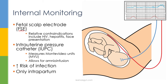The FSE is a long wire with a thin metal spiral at the end that attaches directly onto the fetus — usually the scalp but any part of the baby will work. Relative contraindications for FSE use include maternal HIV and hepatitis, as it can increase transmission risk, and face presentation, as you don't want to poke the baby in the eyes. An intrauterine pressure catheter (IUPC) is a thin catheter placed inside the uterus, resting between the fetus and the uterine wall. When a contraction occurs, it gets squeezed, allowing the monitor to detect both frequency and strength.